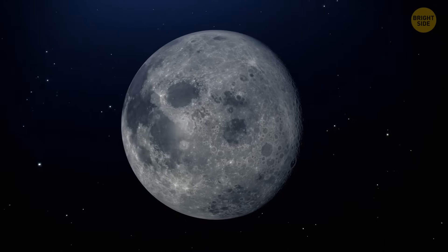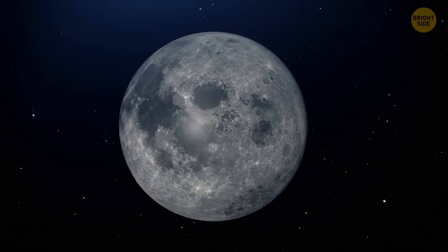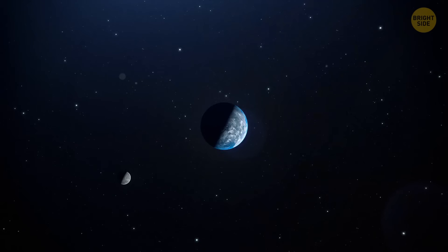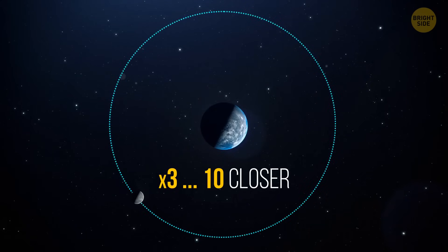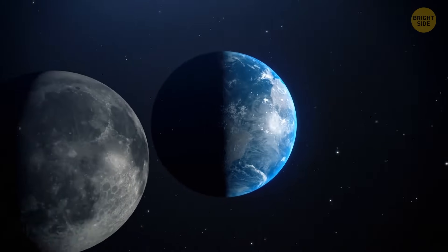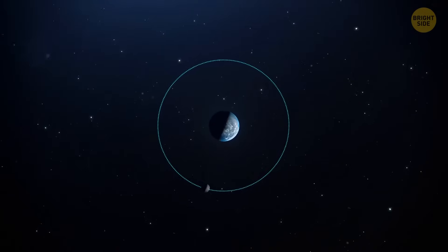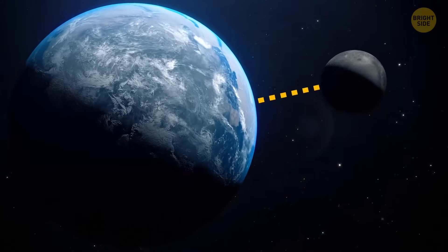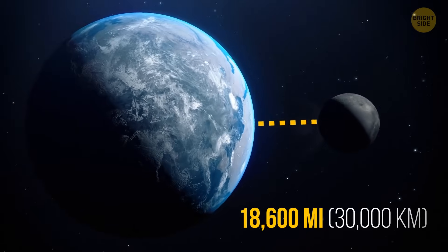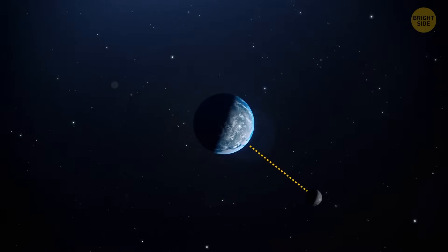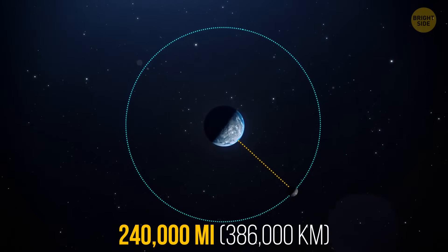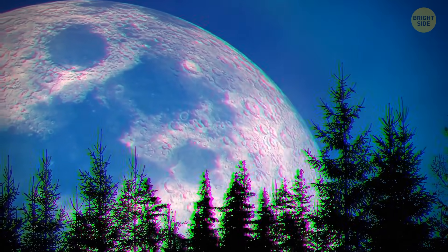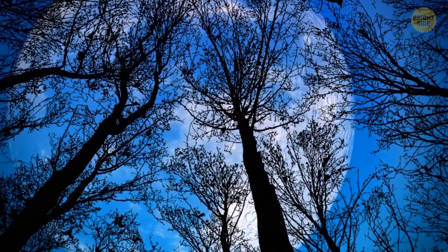After that, poof — the atmosphere was lost in space. But the coolest thing? When the moon did have an atmosphere, the satellite was 3 to 10 times closer to our planet. One computer simulation even suggests the moon was probably up to 19 times closer than it is now — a distance of about 18,600 miles, compared to around 240,000 miles today. That's why the moon looked much, much bigger in the sky. Unfortunately, not even dinosaurs were around to admire the view.